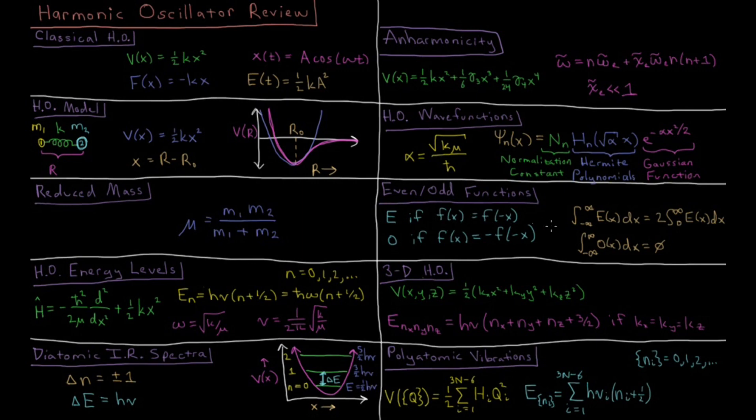The integral from minus infinity to infinity of an even function is twice the integral from zero to infinity because it's symmetric on both sides, on x being negative and x being positive.